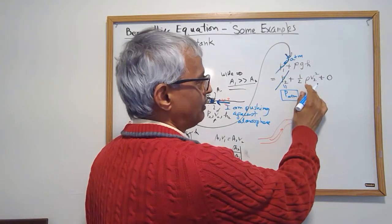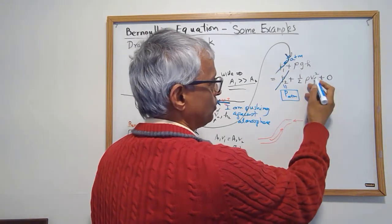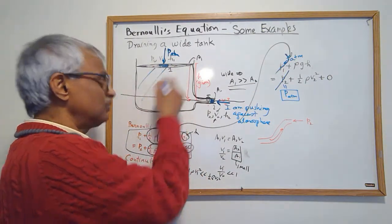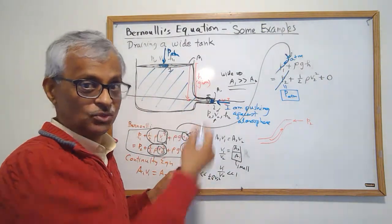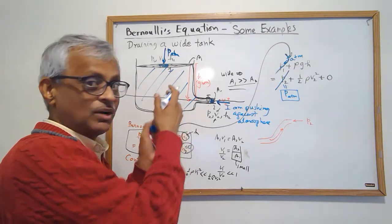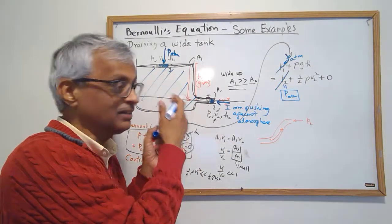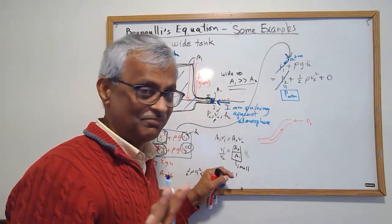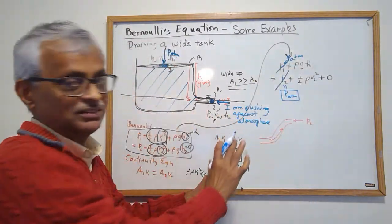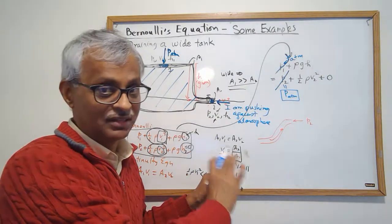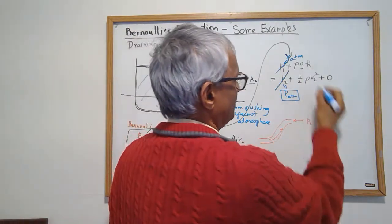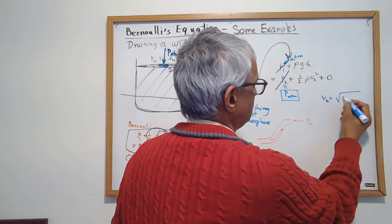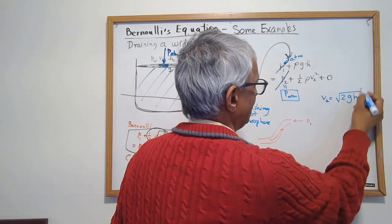So these guys actually cancel out. And then I solve for v2. Rho cancels out too. Strangely, it doesn't matter what fluid you've got, as long as viscosity is not playing a large role. This just comes to v2 is square root of 2 times g times h.